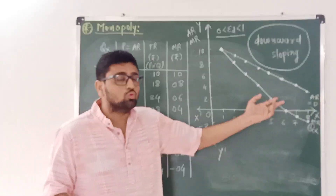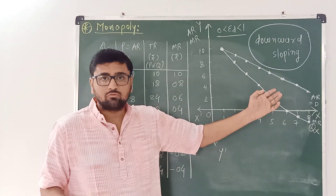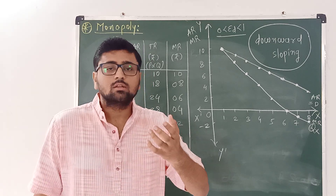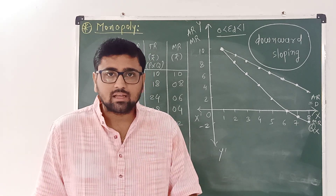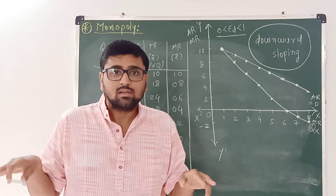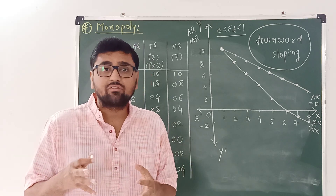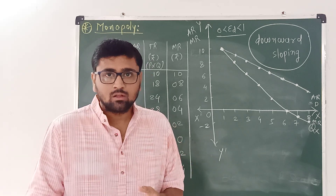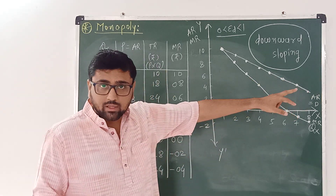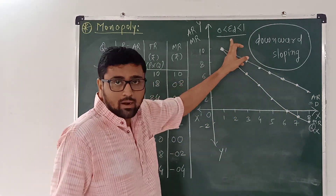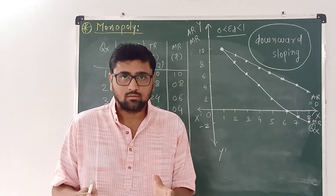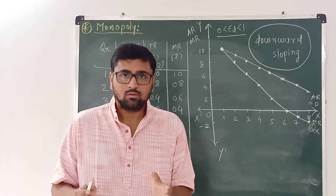If we compare these two curves with a perfectly competitive firm — in perfect competition, the price line, average revenue curve, and marginal revenue curve are parallel to the x-axis and elasticity of demand is infinity. Whereas here in monopoly, these two curves are downward sloping and elasticity of demand is between 0 and 1.